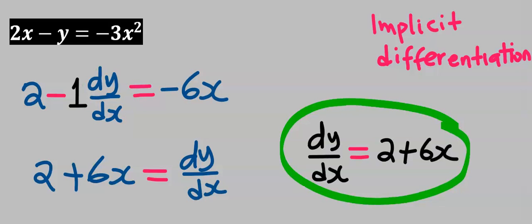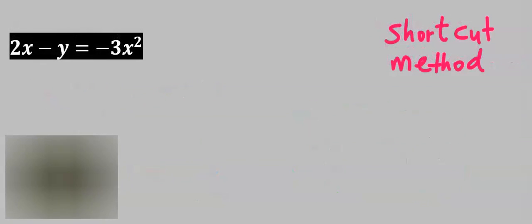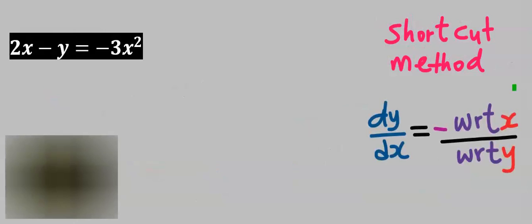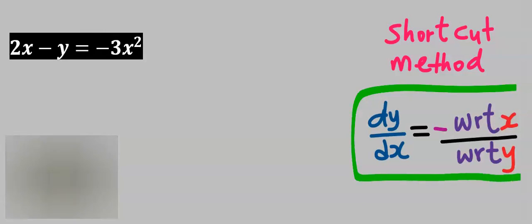The third method is using the shortcut method. We're going to use this formula: dy/dx is equal to minus, there must be a minus, with respect to x divided by with respect to y.